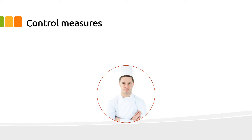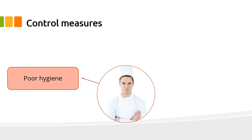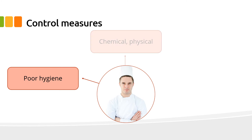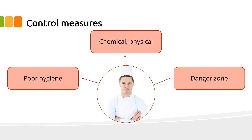Control measures for each production step ensure the actions of staff do not cross-contaminate the food through poor personal hygiene, poor standards of cleanliness, or the presence of pests. Do not expose the food to chemical or physical contamination. Do not expose the food to the danger zone for sufficient time enabling the growth of food poisoning bacteria.